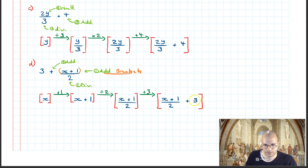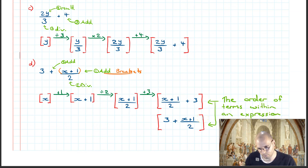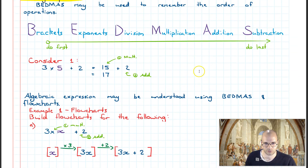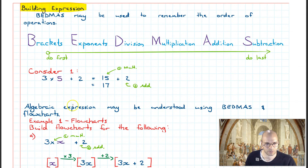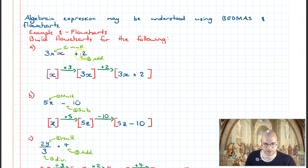One thing you may have noticed is that this final expression looks cosmetically different to what we started with. It's important to remember that the order of terms within an expression is unimportant. As such, 3 plus x plus 1 over 2, and x plus 1 over 2 plus 3, are identical in value. In summary, we revised the concept of BEDMAS and how it can be used to evaluate numerical expressions, then used this knowledge to analyze and understand how algebraic expressions are put together, drawing flowcharts that visualize the steps needed to evaluate them when the value of the unknown is known.